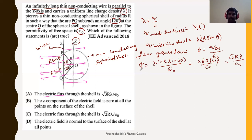From Gauss's law, phi is calculated as root 3 r lambda divided by epsilon naught, which exactly matches option A. So option A is correct.